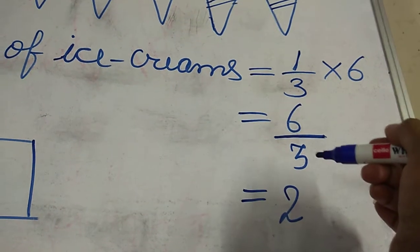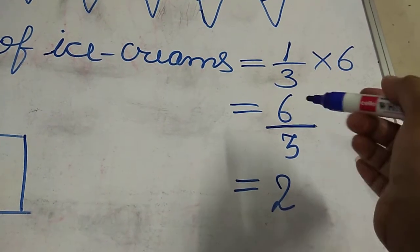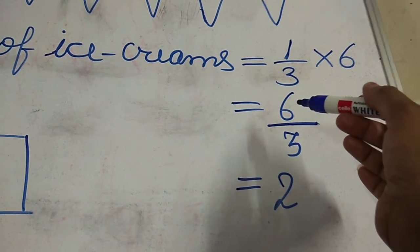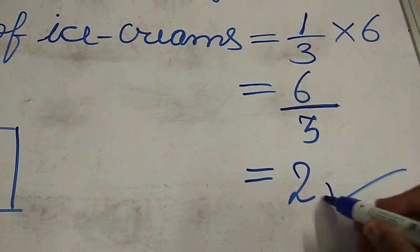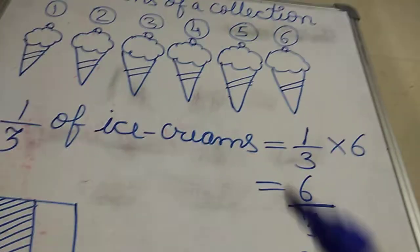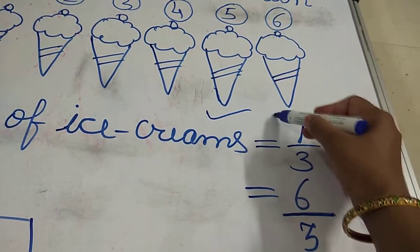So six by three means six divided by three. So in table of three, in how many times six will come? Three ones are three, three twos are six. Means out of six I have to give two ice creams to my best friend.